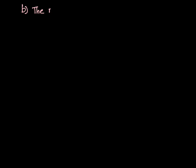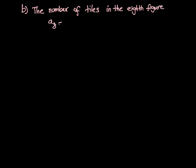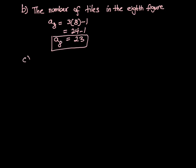The next question was: how many tiles are in the 8th term? Our n is going to be 8. All we have to do is plug 8 into the formula we just made: a(8) = 3(8) − 1. We distribute the 3, giving us 24 − 1, which equals 23 tiles.